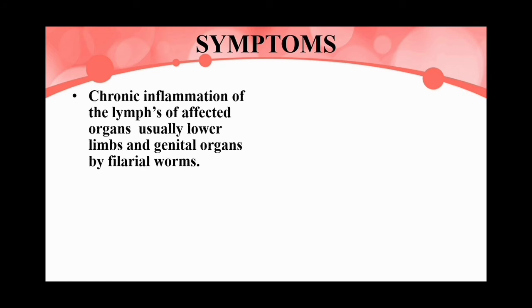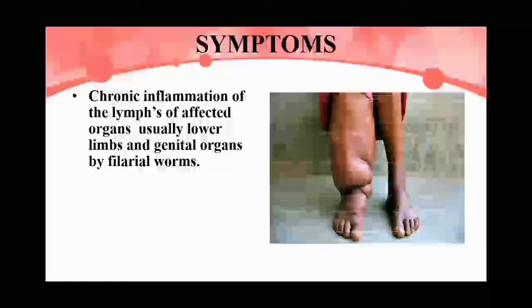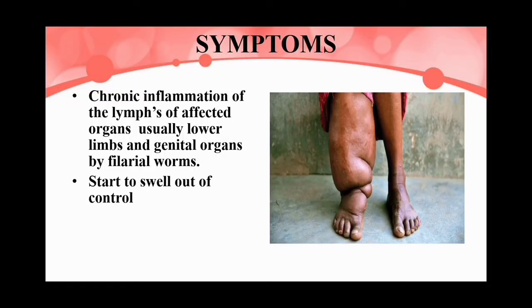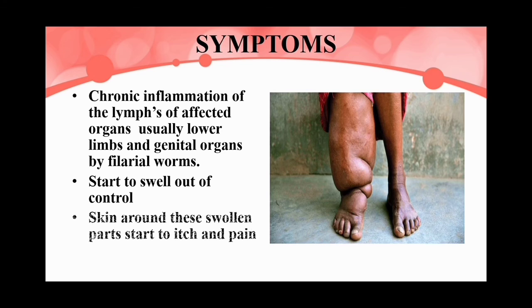The major symptoms of filariasis include chronic inflammation of the limbs and affected organs — usually the lower limbs and genital organs. The area starts to swell, and the skin around the swollen part becomes itchy and causes pain. At the initial stage of infection, the person also gets fever, nausea, and vomiting.